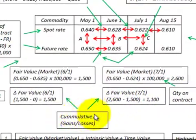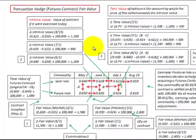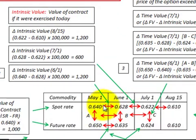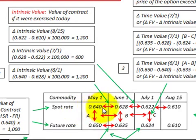When calculating our change in fair value for the period, remember we're looking at a cumulative change between our gains and losses. The intrinsic value is the value of the contract if it were exercised today, and we compare spot rates between periods. Looking at our first period of June 1st, we compare the 0.628 spot rate with the spot rate at contract inception on May 1st of 0.640. We had a reduction in price for the period, so we had a gain in intrinsic value of $1,200.